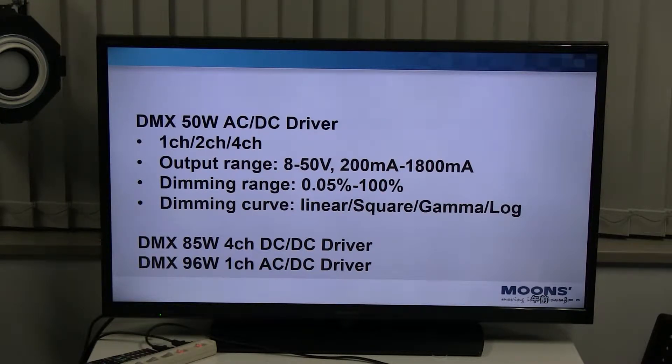Among them, 50 watts products have a single output, dual output, and four output power supplies. Their output voltage is 8 to 50 volts. Output current 200 to 1800 mA. And the output parameters are adjustable and programmable.